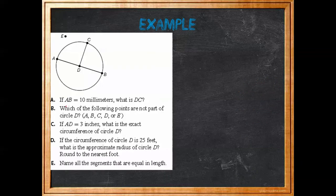If AB equals 10 millimeters, what is DC? AB is the diameter and DC is a radius. So if AB is 10, then DC has to equal 5 millimeters.